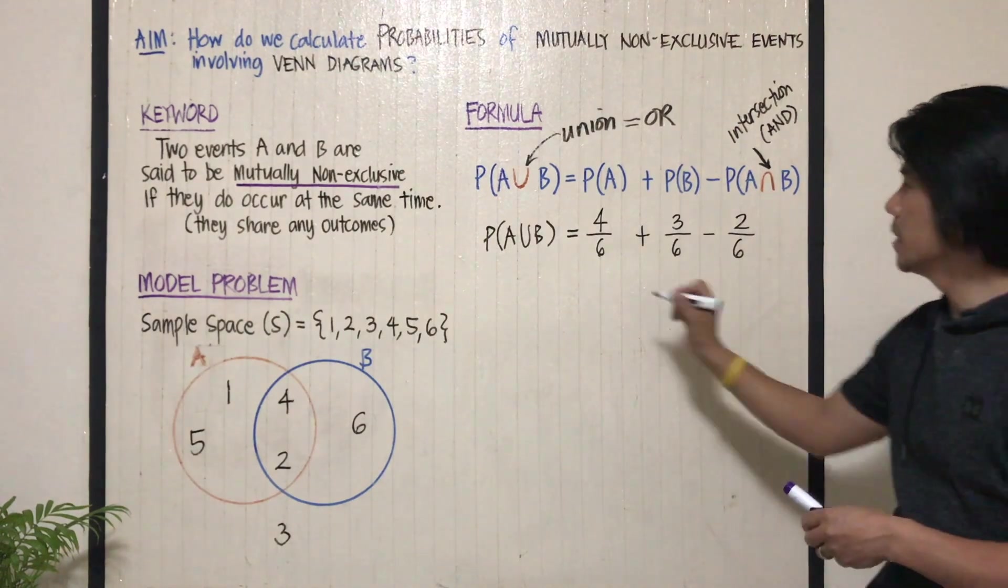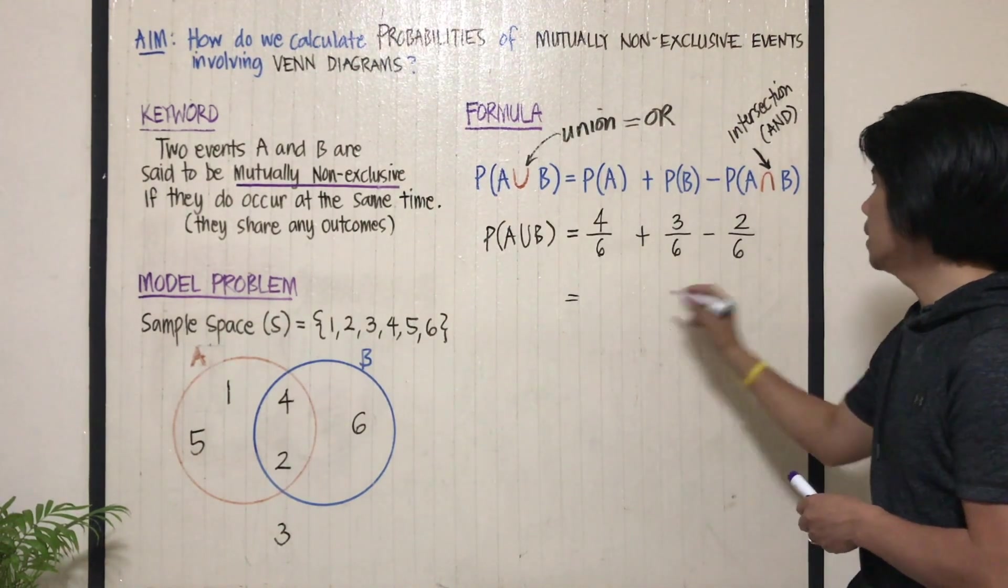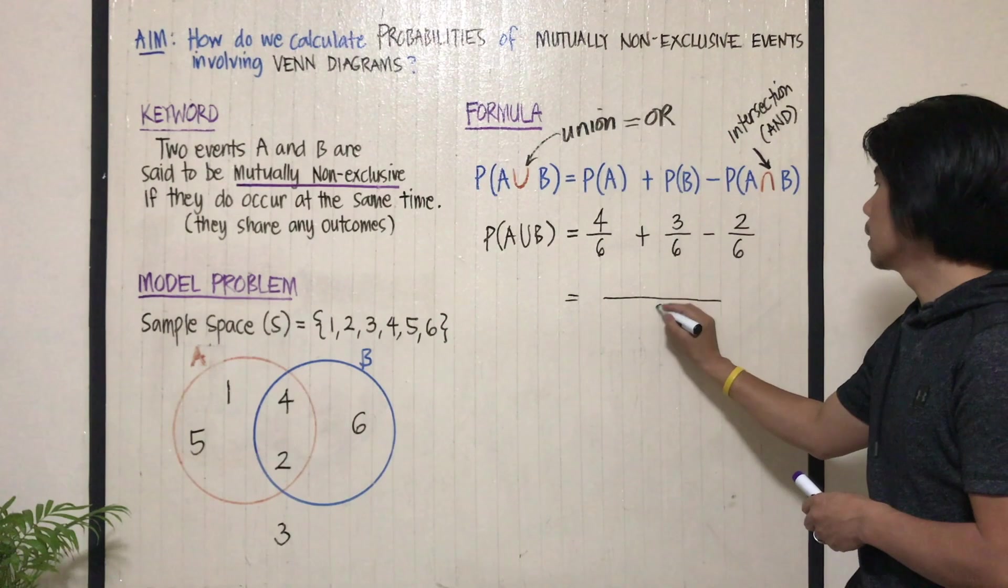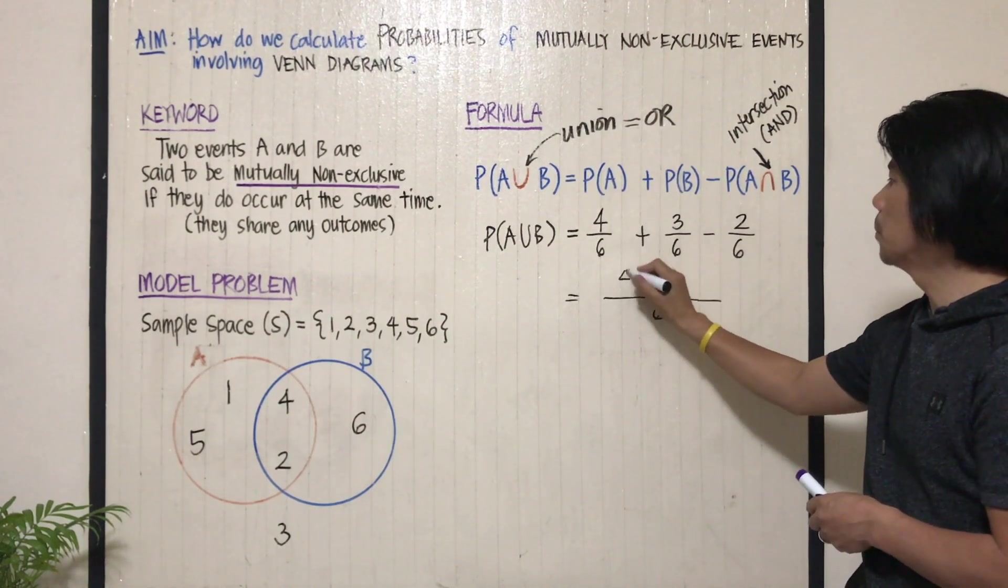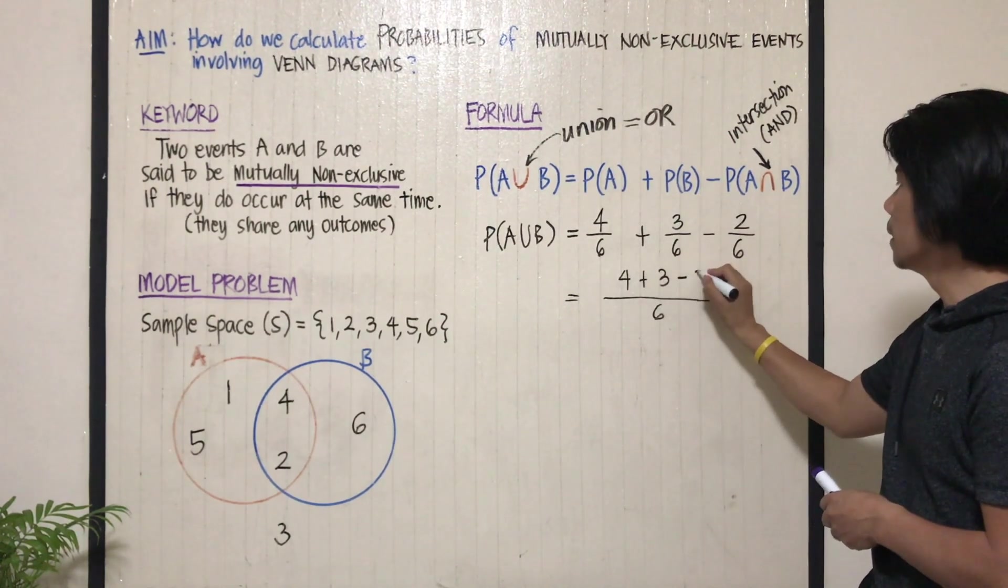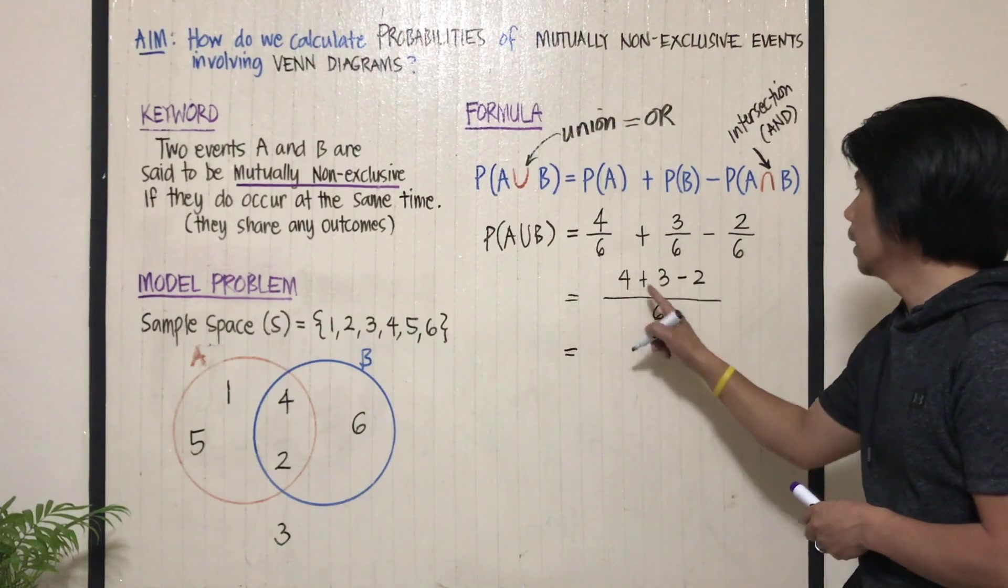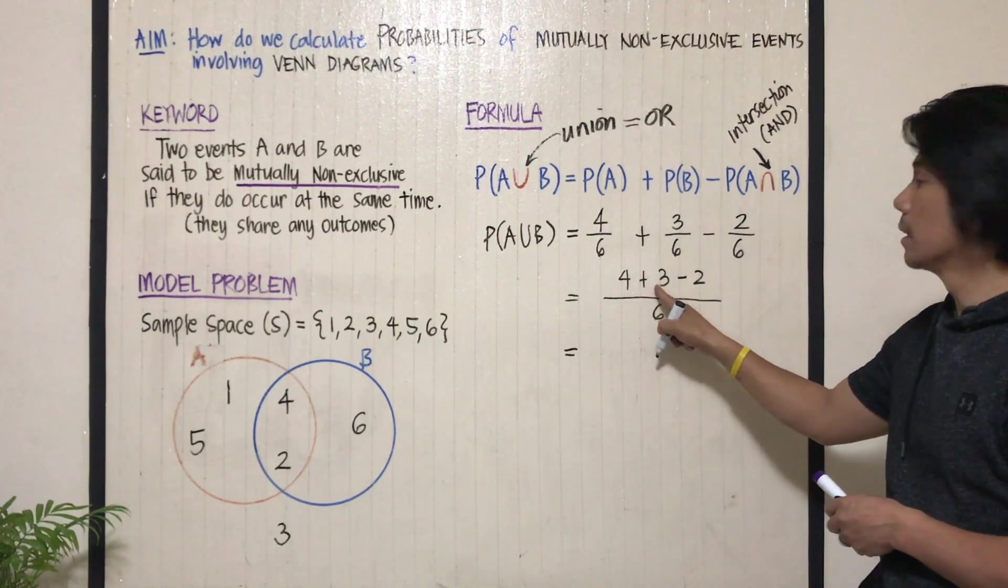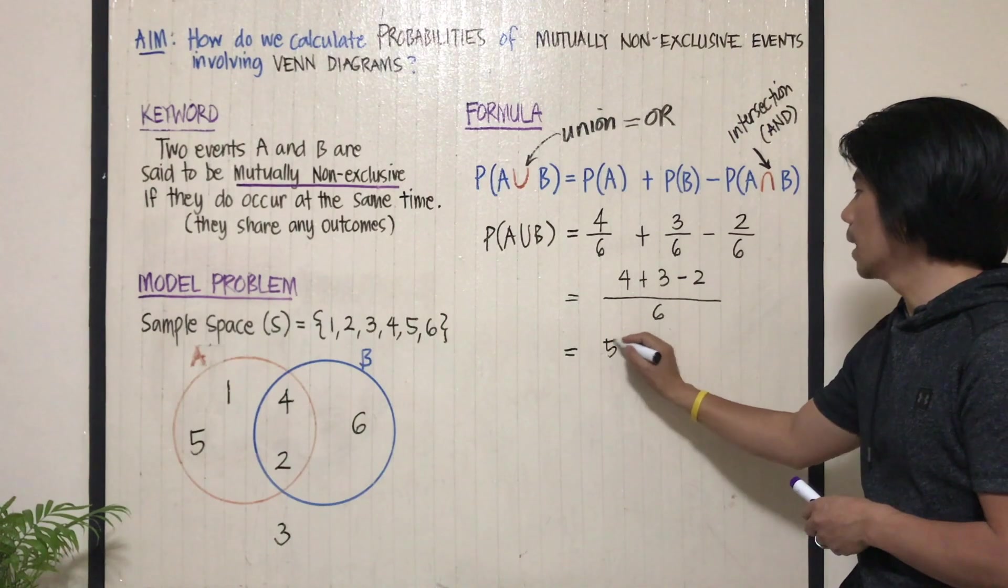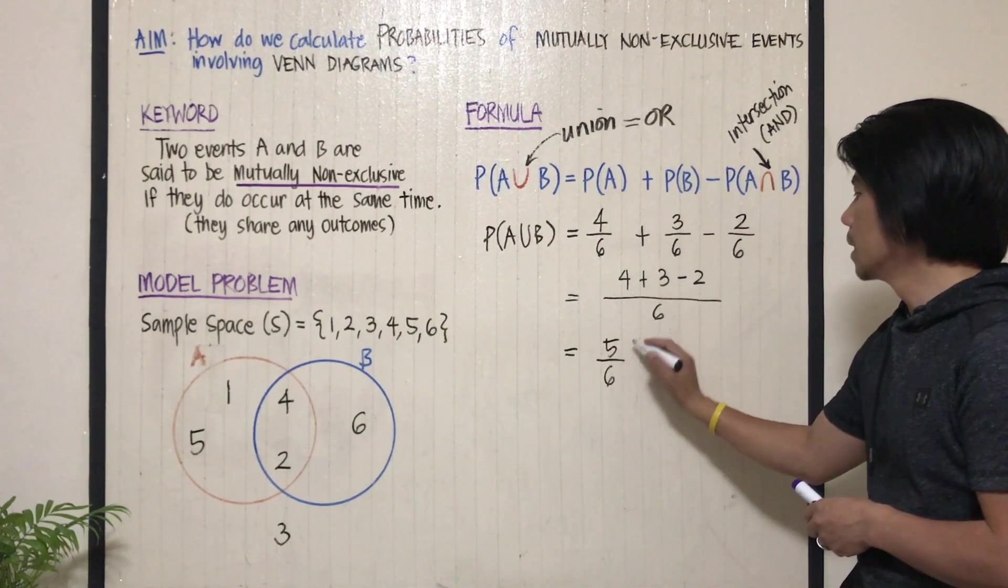Now, since they have all the same denominator, we just simply copy that, add the numerators, four plus three minus two. Now, four plus three is seven, minus two is five. So that's five out of six.